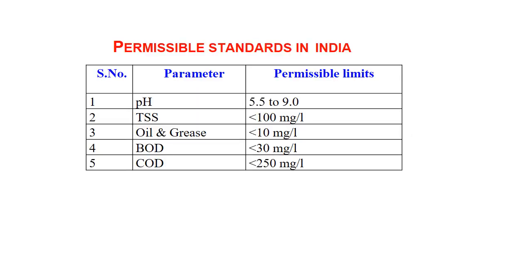Here we can see the BIS standard for discharged or treated water: pH 5.5 to 9, total soluble substances less than 100 mg/L (100 ppm), oil and grease at 10 mg/L (10 ppm), BOD less than 30 mg/L (30 ppm), and COD less than 250 ppm.